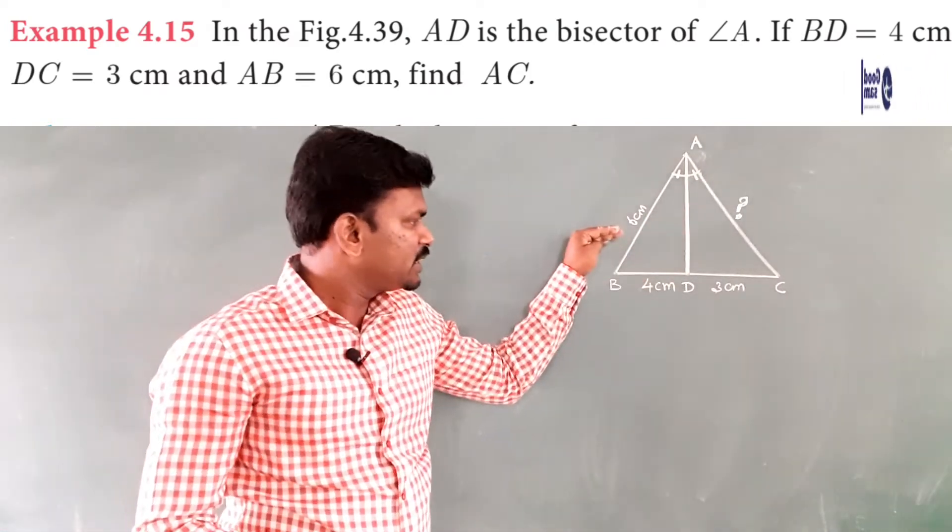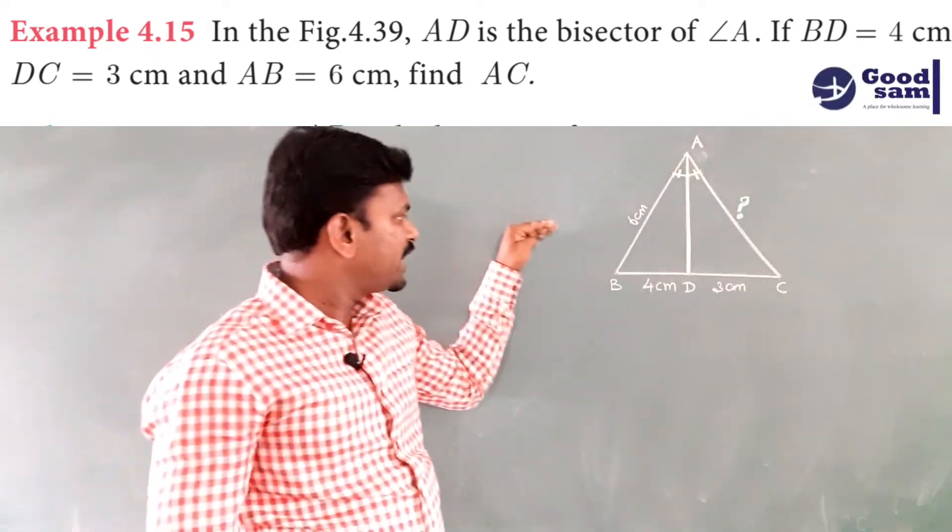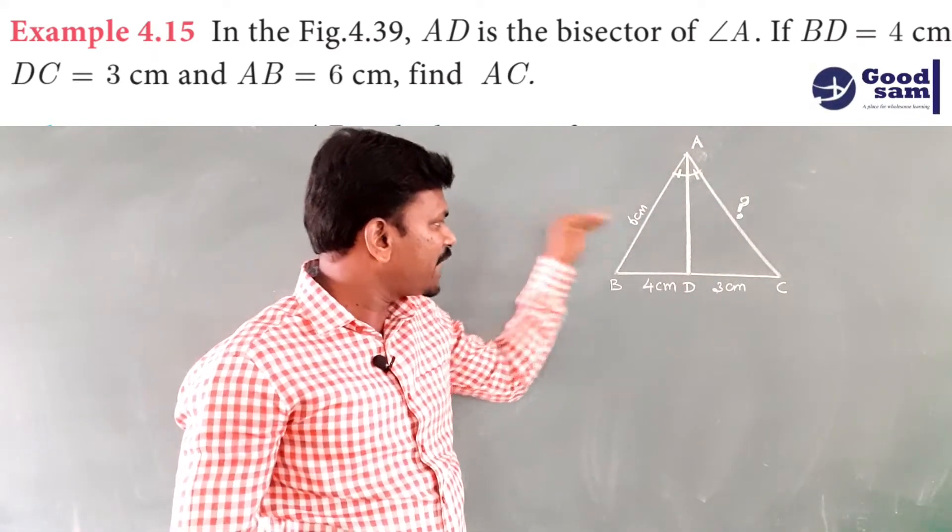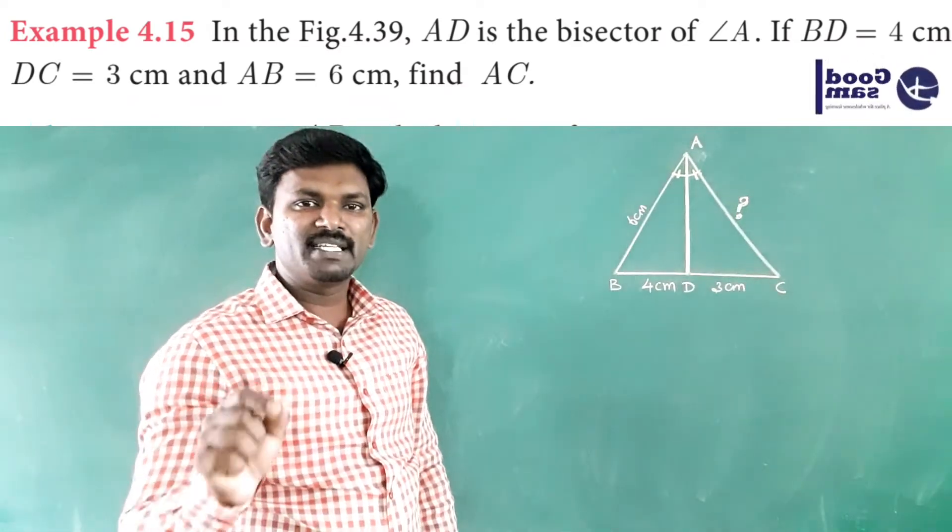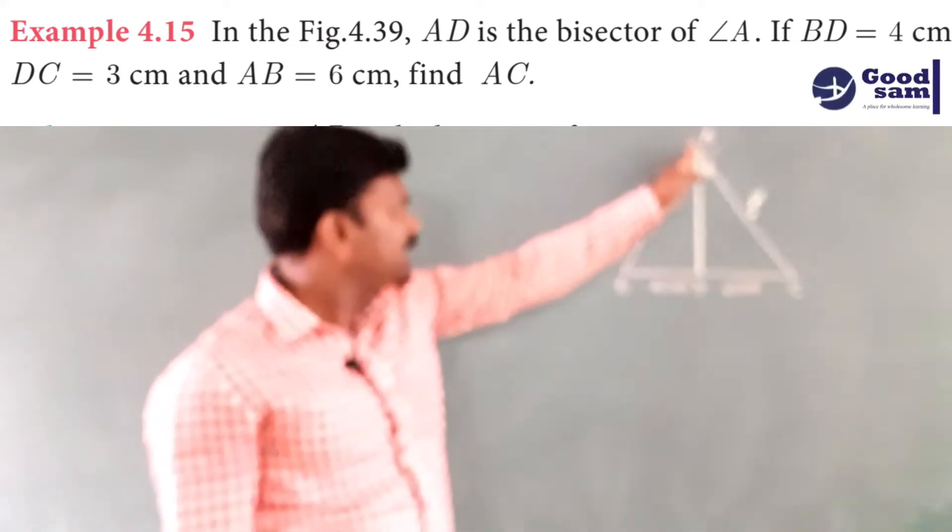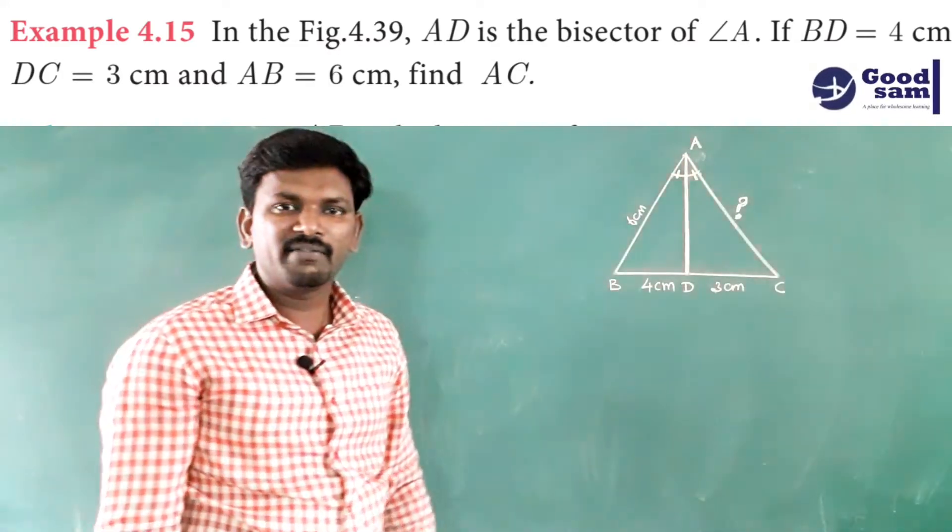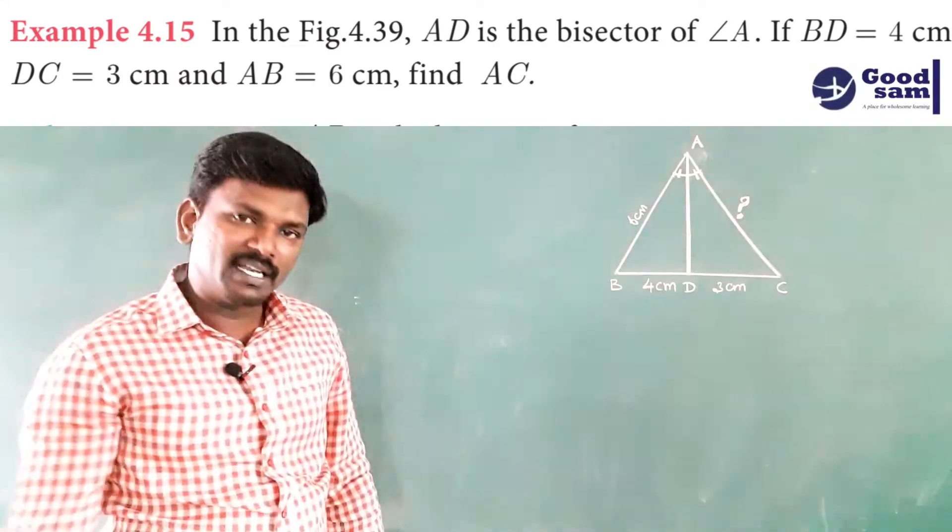If in the question, if the given line is parallel to any one of the side, we will use basic proportionality theorem. If they are giving the angle bisector, we will use the theorem angle bisector.